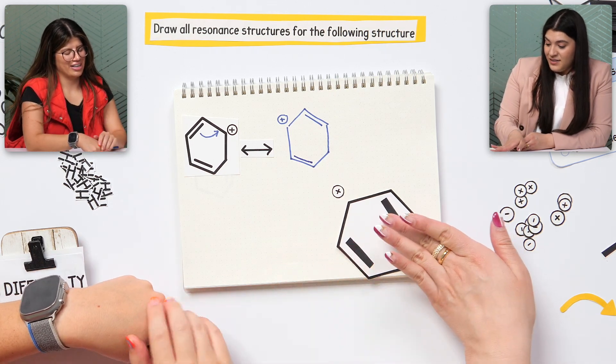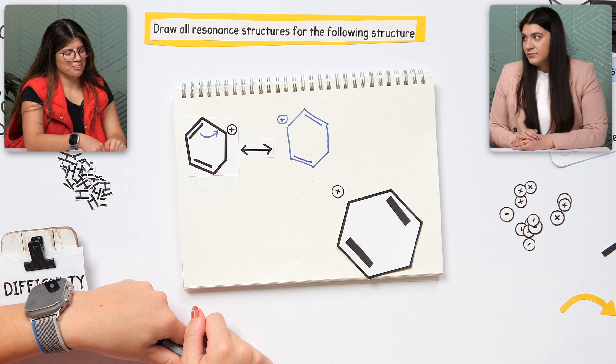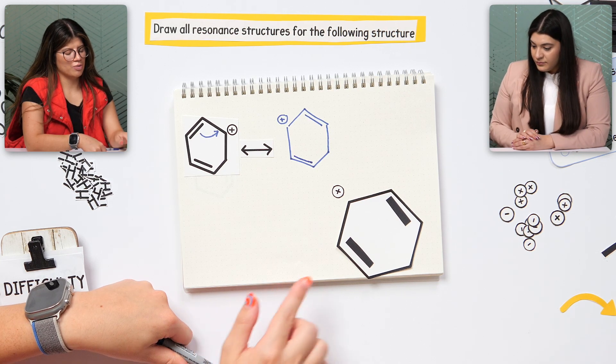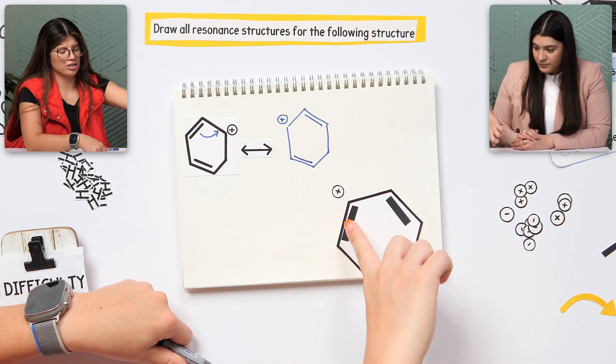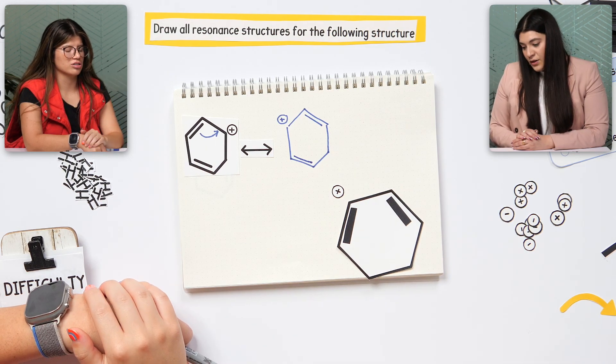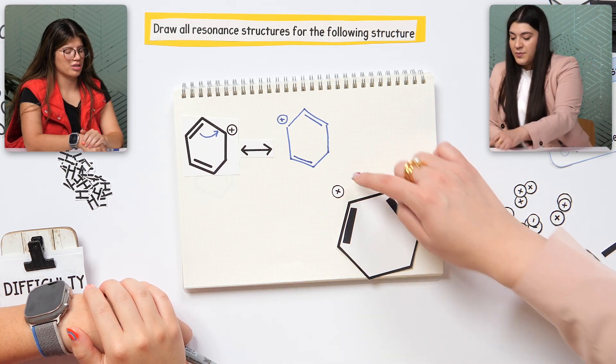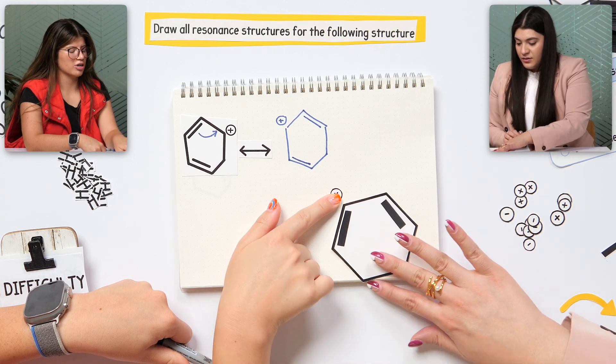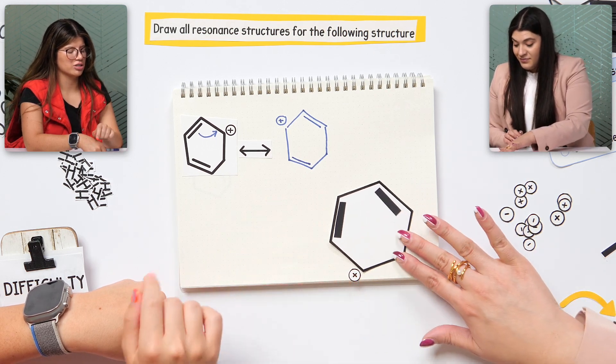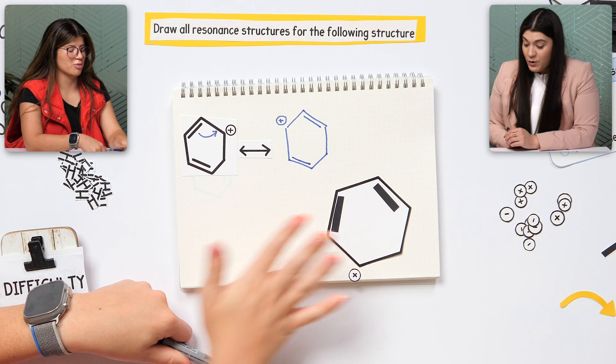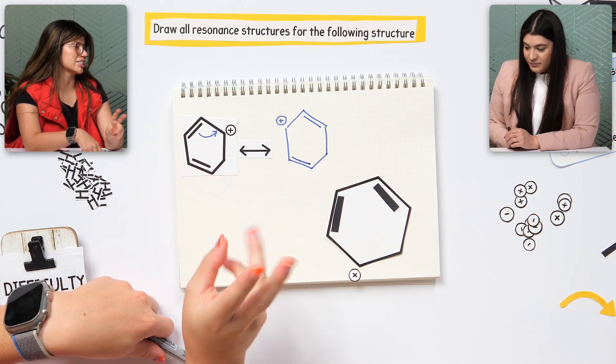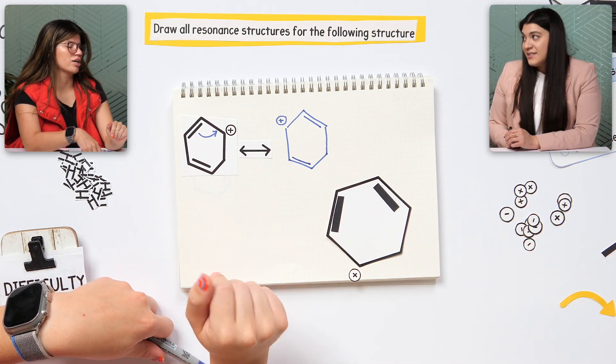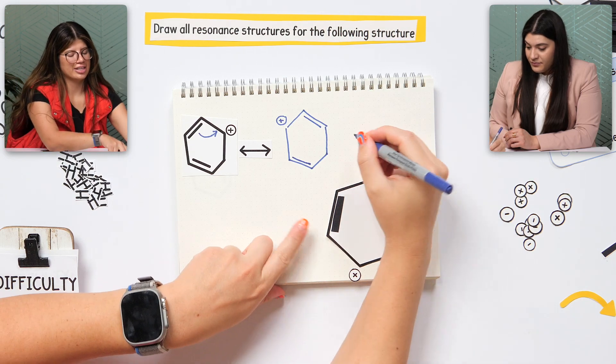Then what else? How else can we keep moving this? Could we move this, like, up here? Like that? You're right. That's right. We could move that up. Then what happens to the positive charge? Then this positive would come down here. Good. And that would be another resonance? That would be another. So we don't actually have to move the bond at the same time. No. Like, we could do one at a time? Yes. That's cool.